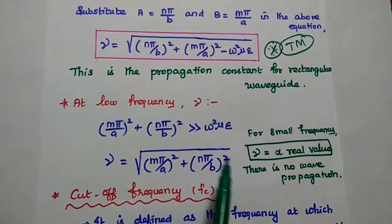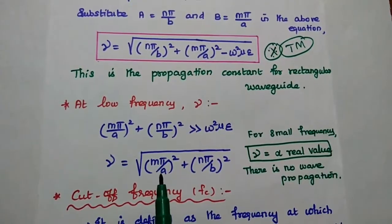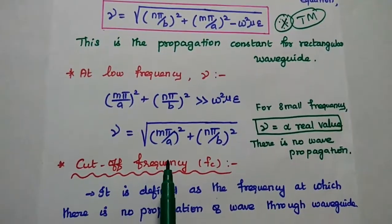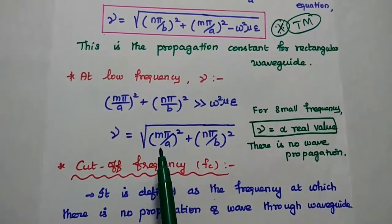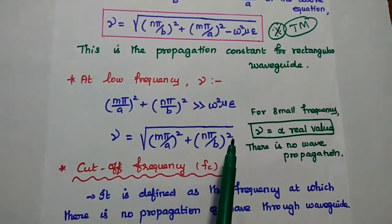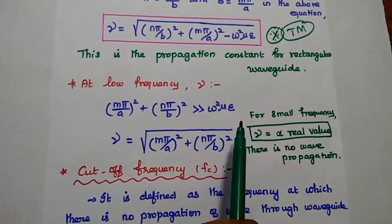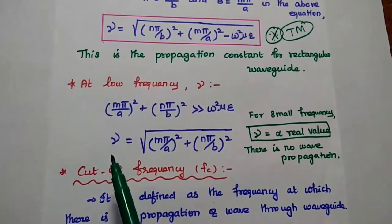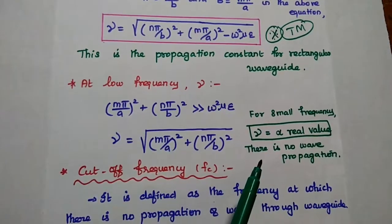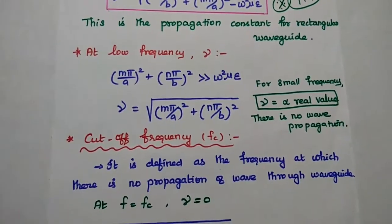For small frequency range, the propagation constant has only the real term. So here it has the attenuation value alpha, which is equal to square root of (Mπ/a) whole squared plus (Nπ/b) whole squared, since these two values are far greater than omega squared mu epsilon. As gamma equals the real term, there is no wave propagation. So at low frequency, there is no wave propagation.